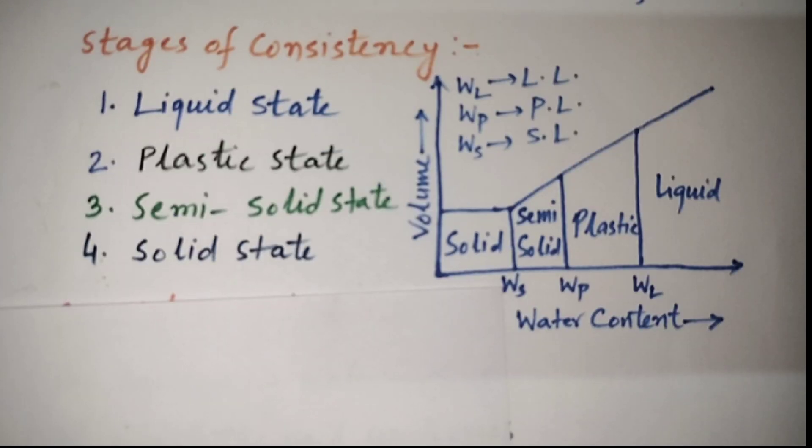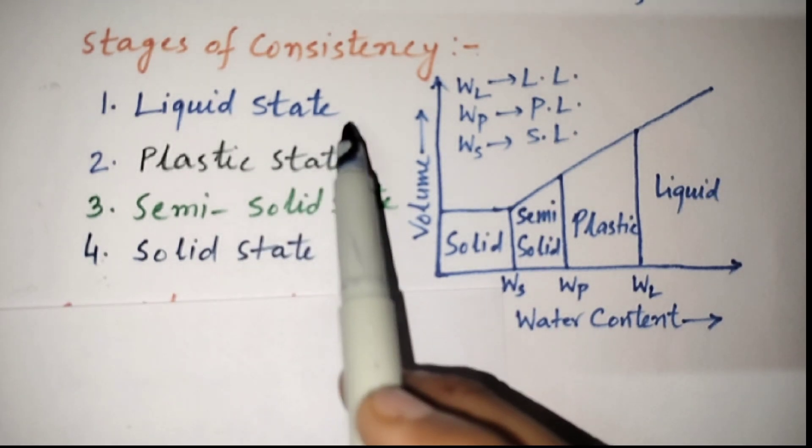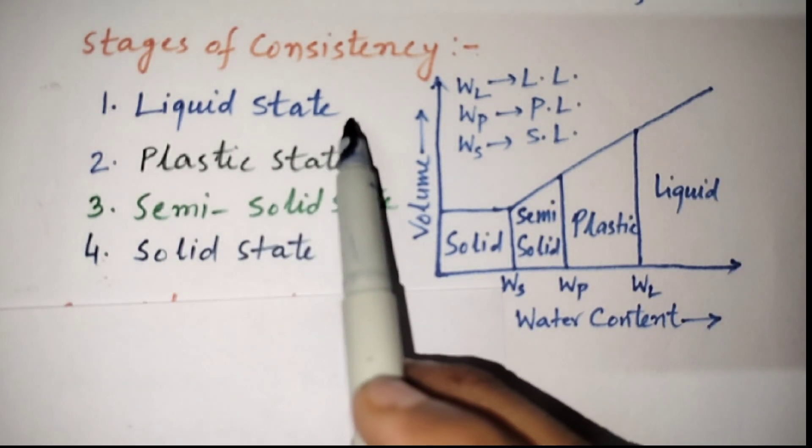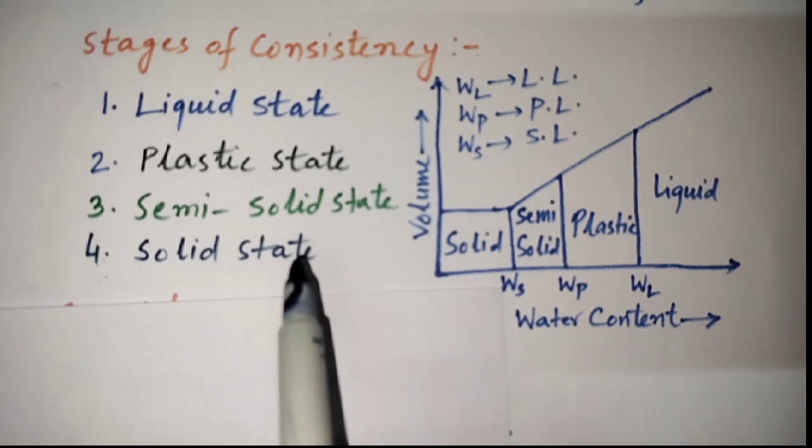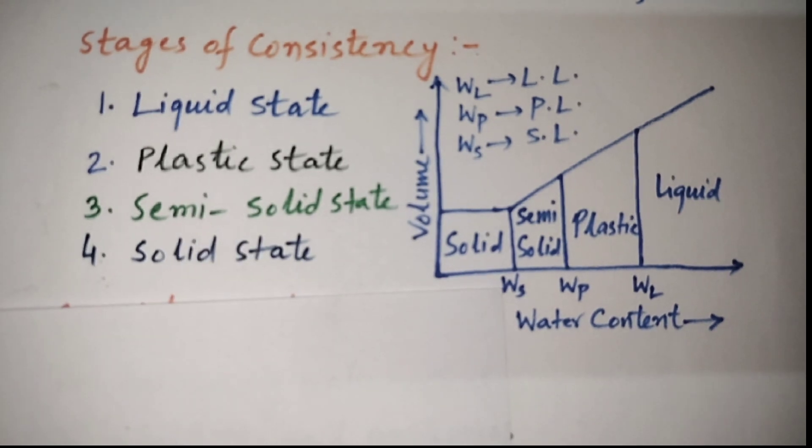The physical properties of clay are considerably influenced by the amount of water present in them. Depending upon the water content, the following four stages: liquid state, plastic state, semi-solid state and solid states are used to describe the consistency of clay.